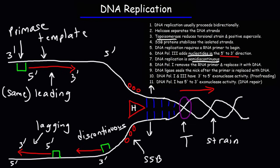DNA polymerase 1 removes the RNA primer and replaces it with DNA. After replication is nearly finished, the RNA primer is removed and replaced by DNA polymerase 1 with DNA material. These fragments on the lagging strand are called Okazaki fragments. Another enzyme, DNA ligase, then seals the nicks between the Okazaki fragments. And so that completes the process of DNA replication.